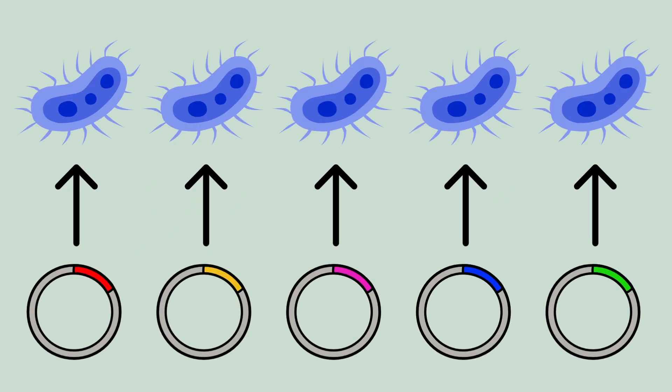We plan to create five plasmids which contain MLRA, MLRB, MLRC, MLRE, and MLRF genes, respectively, and insert each plasmid into a separate E. coli culture, which will be tested for its effectiveness in breaking down microcystin LR.